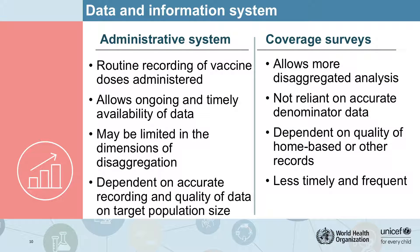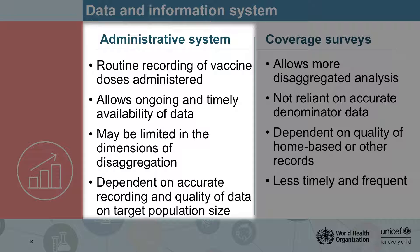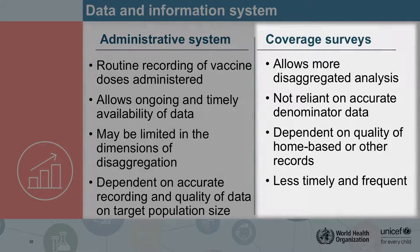So how will you get the data to monitor all these indicators? We distinguish between two systems. The first, the administrative system, is the entire system set up to record vaccinations as they are administered and report upwards to the public health authority. These systems allow for ongoing and timely availability of data, but they may be limited in their dimensions of disaggregation and are dependent on accurate recording and good population estimates. On the other hand, coverage surveys allow for more disaggregated analysis. They are not as reliant on accurate denominator data because they rely on a sample of the population being interviewed, but they are dependent on the quality of home-based records and are less timely and less frequently available.